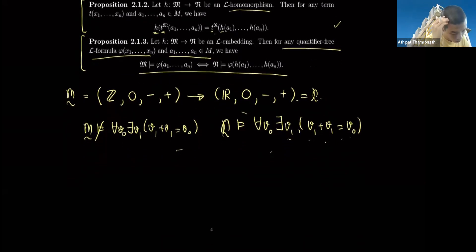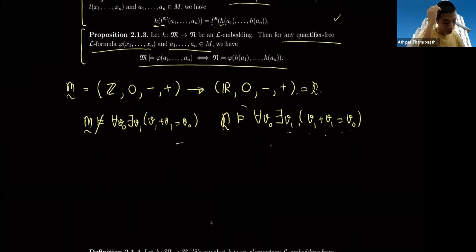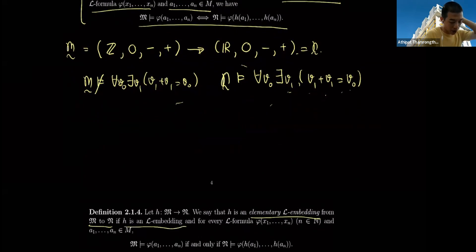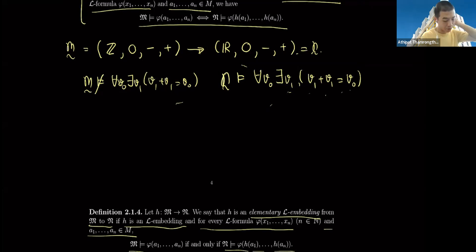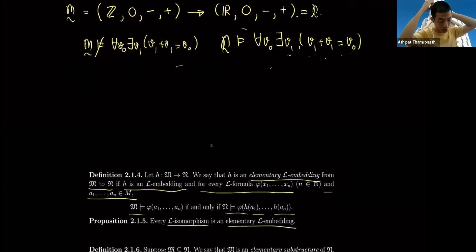However, L-embeddings do not preserve all sentences in general. For example, you can embed (ℤ, 0, −, +) into (ℝ, 0, −, +), but ℝ satisfies 'for every v₀ there exists v₁ such that v₁ + v₁ = v₀' while ℤ does not, since odd integers cannot be divided by two. So homomorphisms cannot preserve sentences involving quantifiers. This motivates elementary embeddings: h is an elementary L-embedding from M to N if it is an embedding and for every L-formula φ and elements a₁, …, aₙ, M ⊨ φ(a₁, …, aₙ) if and only if N ⊨ φ(h(a₁), …, h(aₙ)).